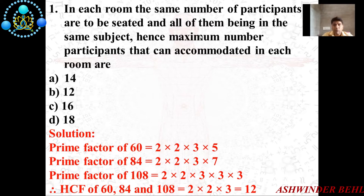Since the question is talking about the maximum number of participants, we can find out the highest common factor. There are four options: 14, 12, 16, and 18.